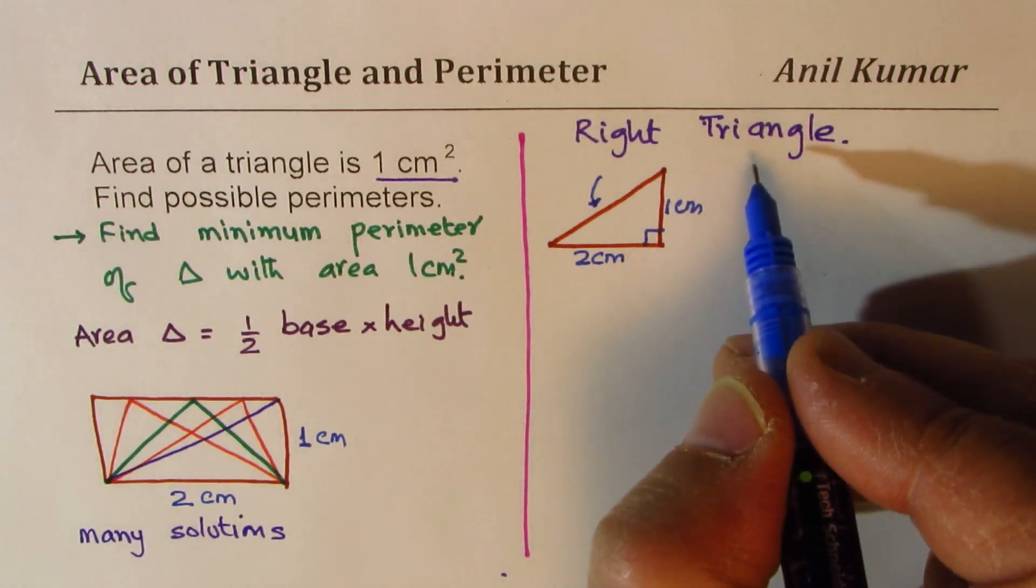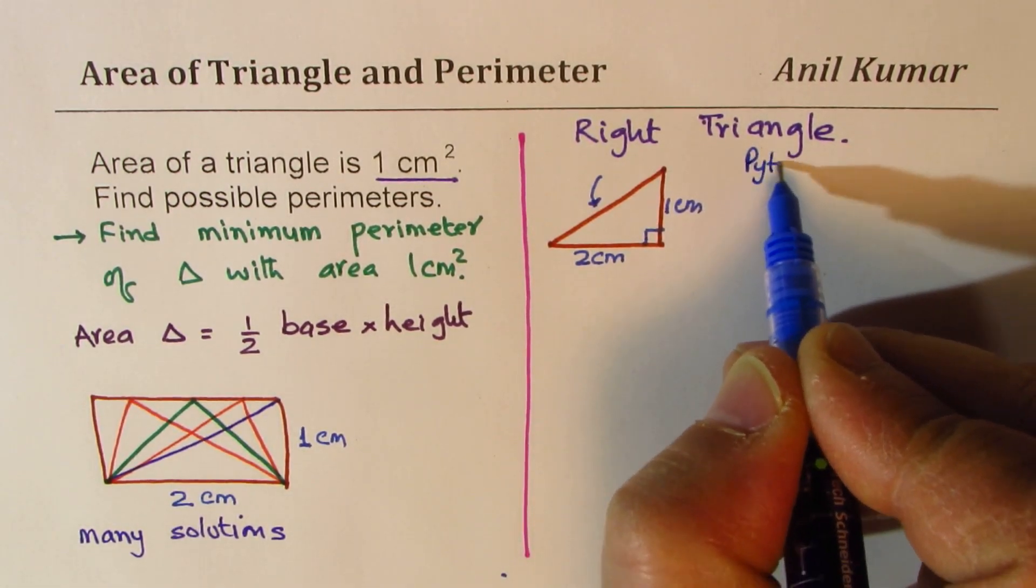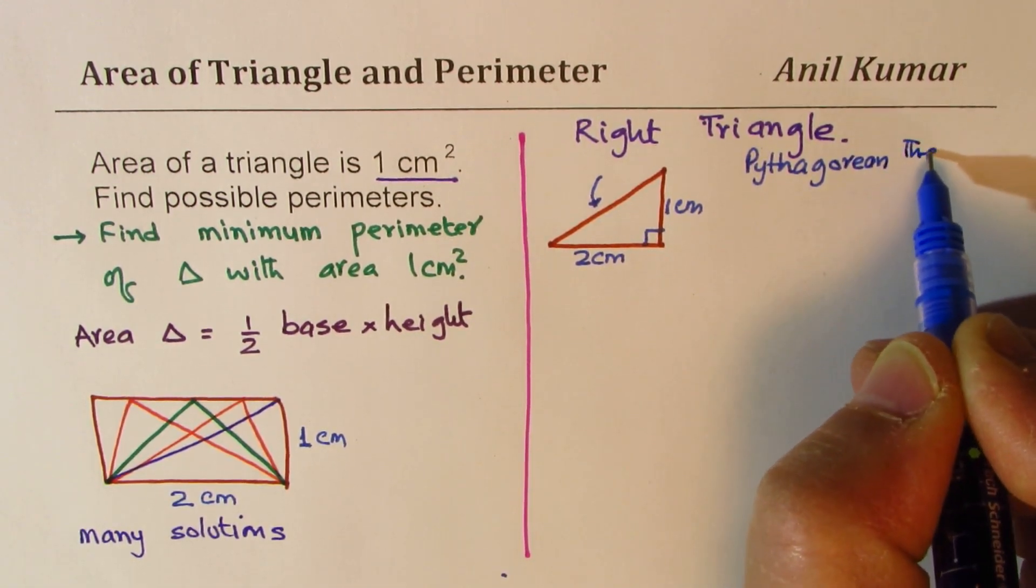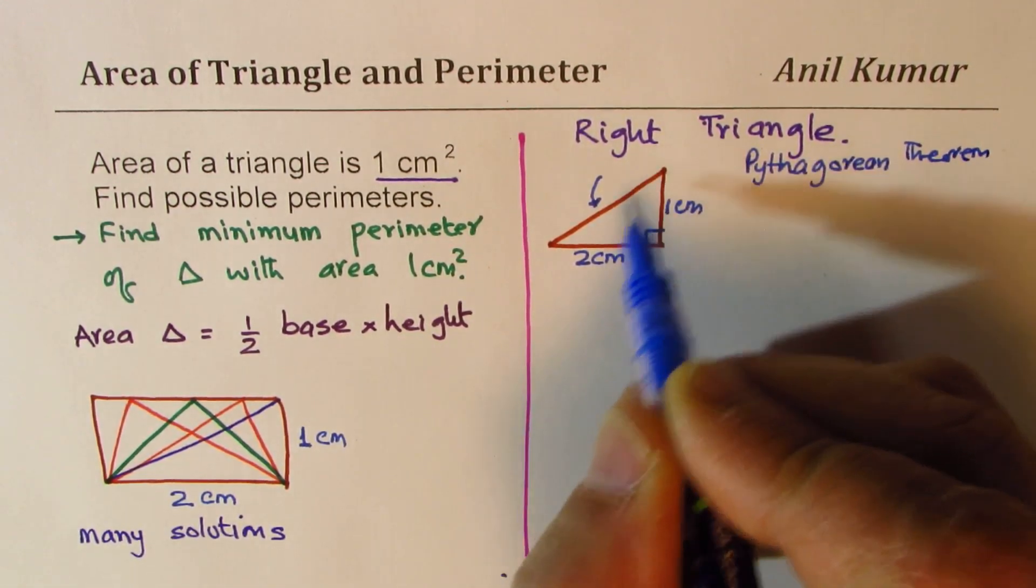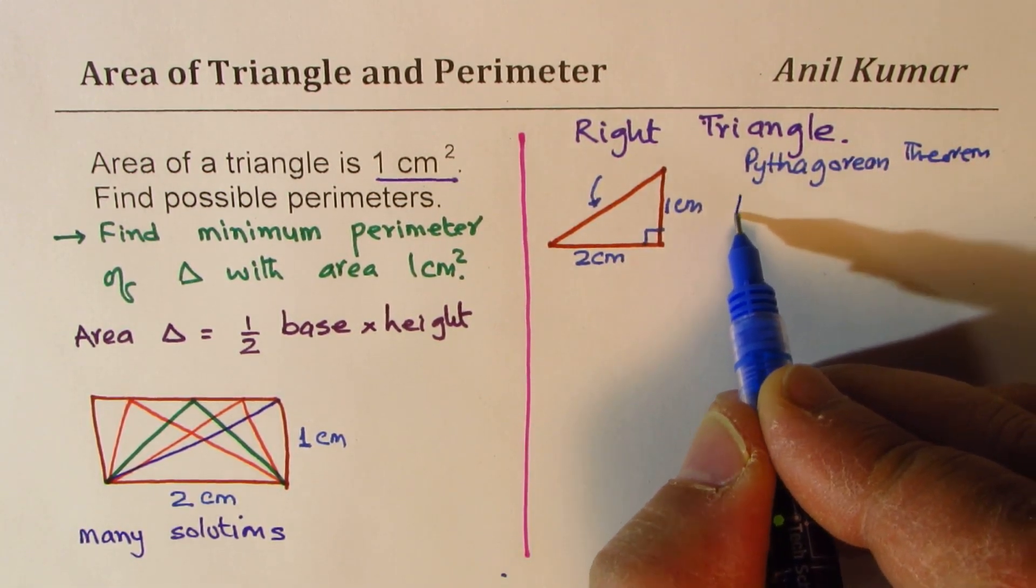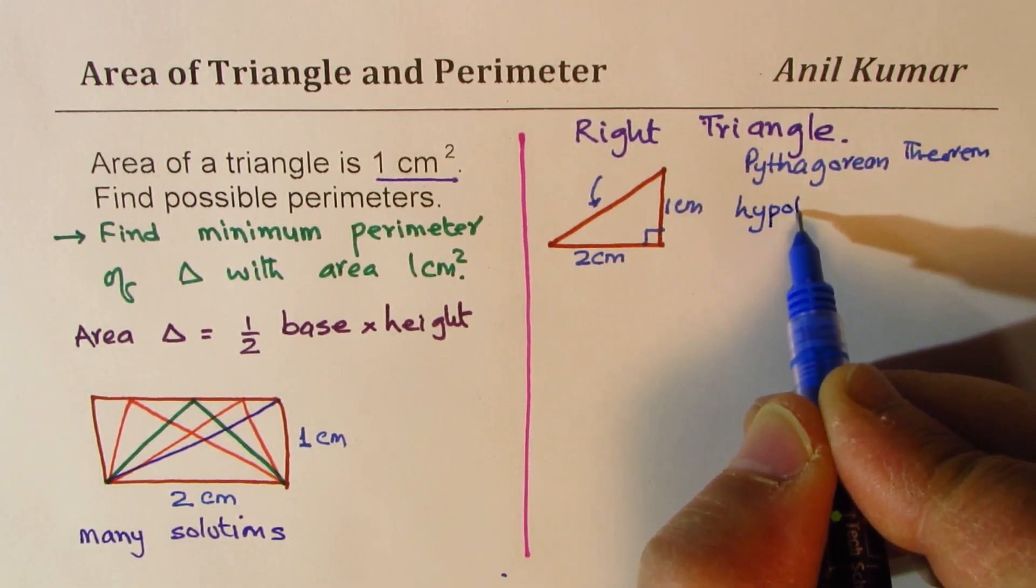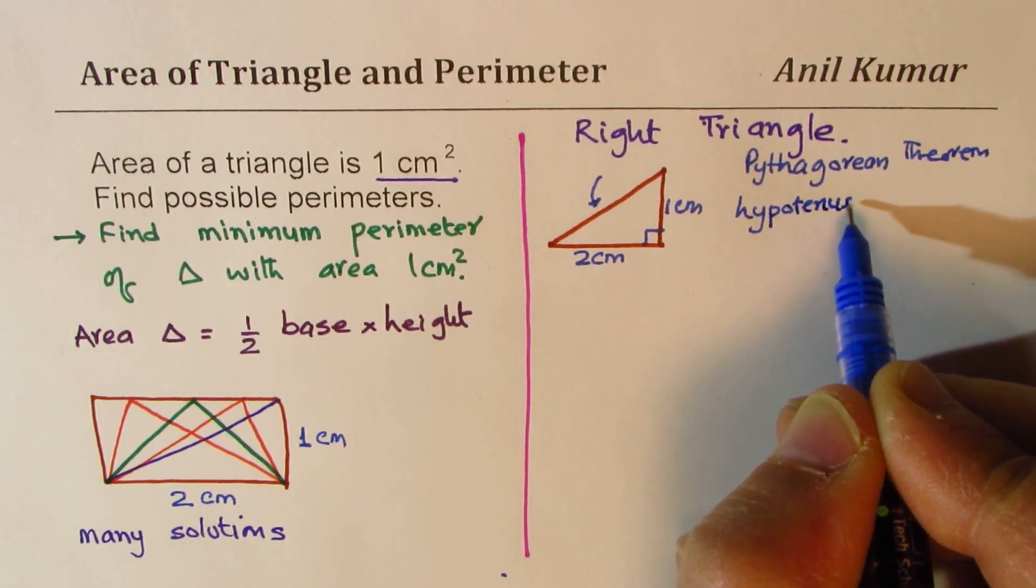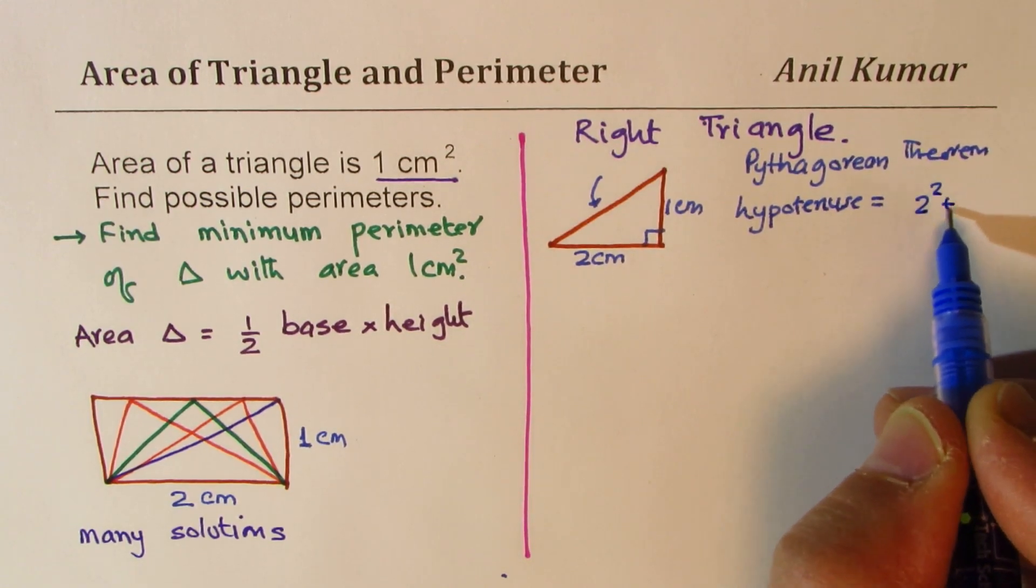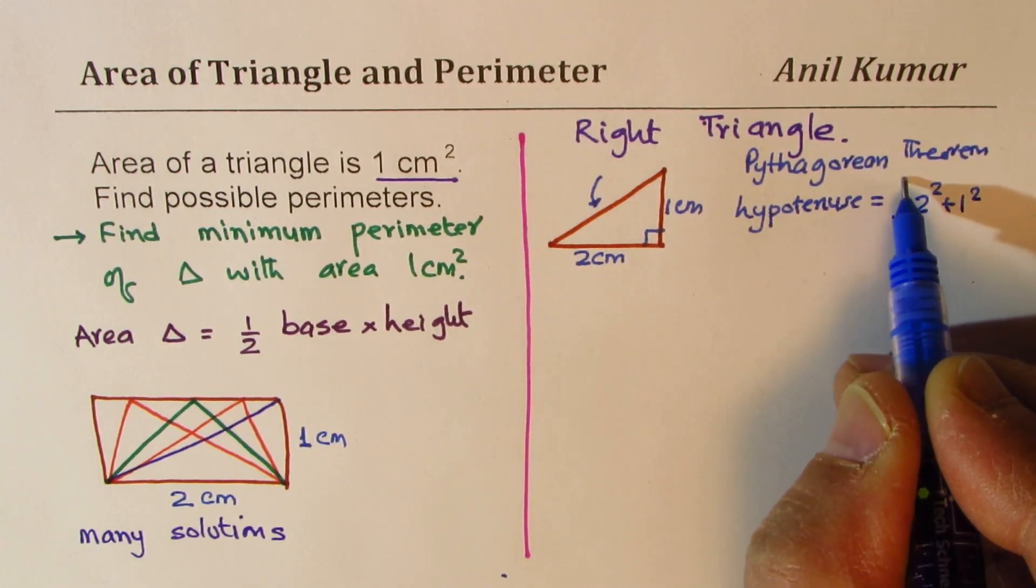So what is going to be the hypotenuse? We can apply Pythagorean theorem. And we know this third side, which we say hypotenuse, is equal to square of these: two square plus one square and the square root.